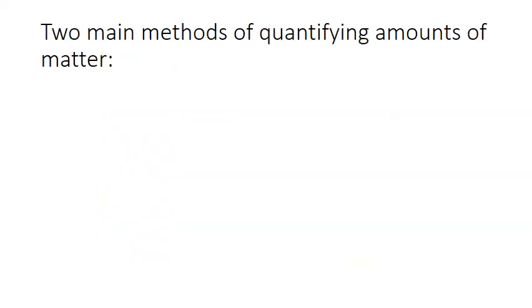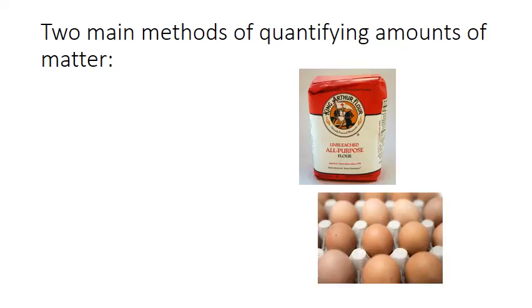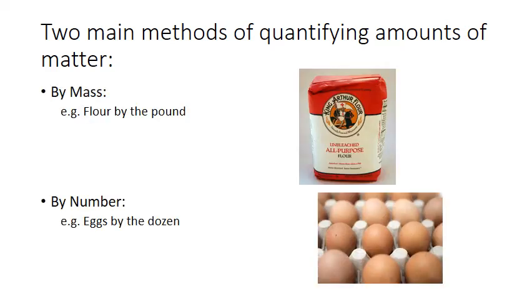There are two main methods for quantifying matter: by mass and by number. We deal with both types of measurements on a daily basis in our life. For example, we buy our flour by the pound, but we always buy our eggs by the dozen. Some substances are much easier to measure by mass, and others by number.